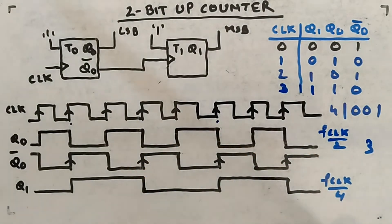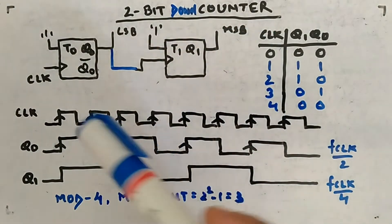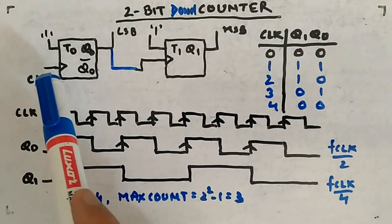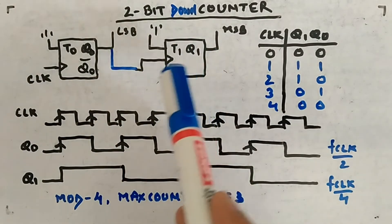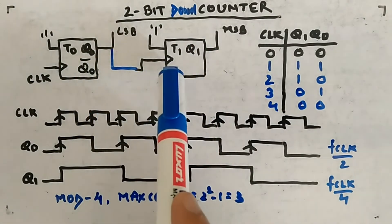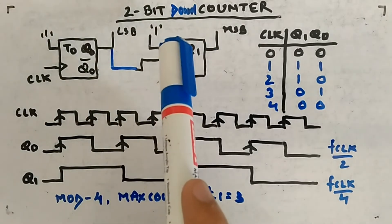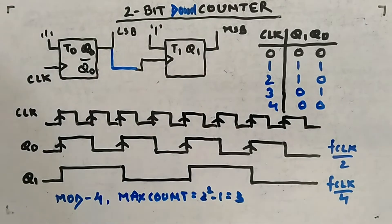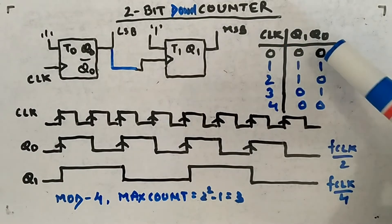Let's quickly look at the 2-bit down counter now. You can see the clock is same here. Now instead of providing Q0 bar as the clock to T1, I am providing Q0 as a clock to T1. That's the only change I did. And instead of up counter, it became down counter. Clocks are given: clock, Q1, Q0. Initially they were zero.